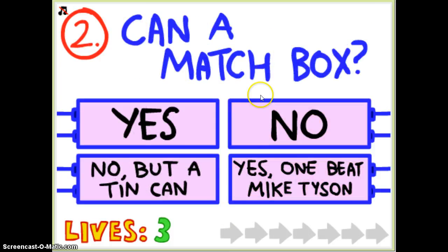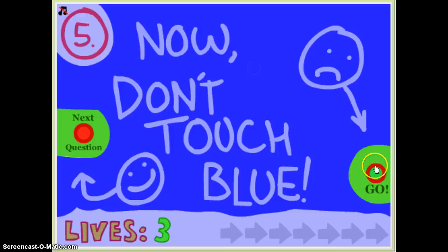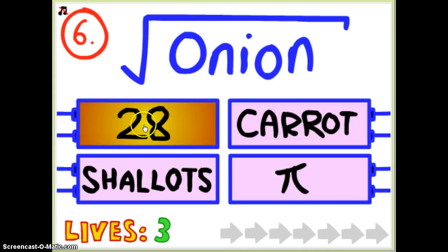How many holes in a polo? Four. Can a match box? No, but a tin can. Answer mouse. Next question. This. This. What?